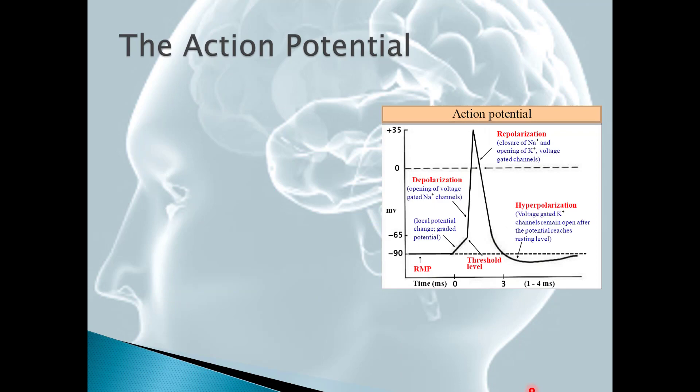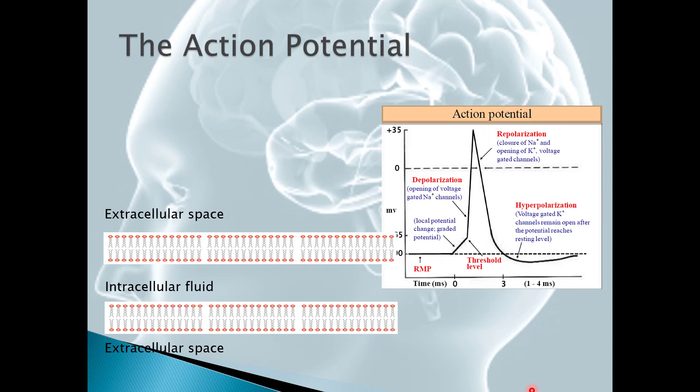So due to this change in the distribution of ions, we now have a positive charge in the intracellular fluid. So again, if we look here on the graph, we're up here at positive 35 millivolts. So the charge inside relative to outside is a positive charge now because we've brought all those sodium ions inside. That means the outside, or the extracellular space, has a negative charge relative to the inside of the neuron.